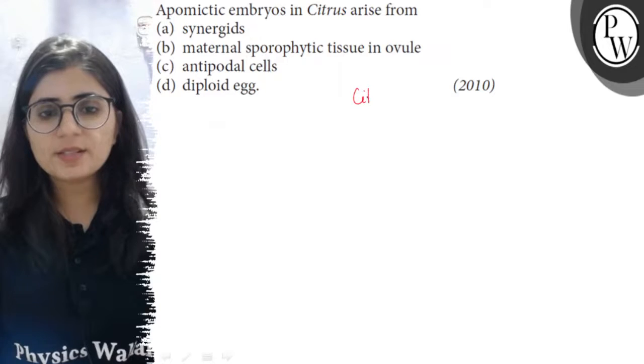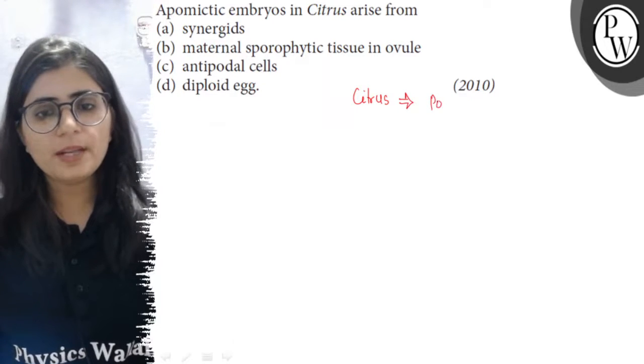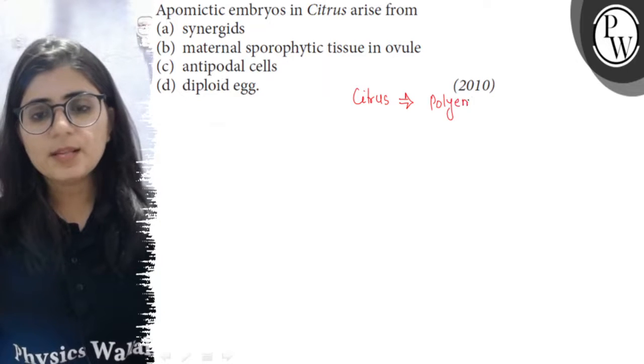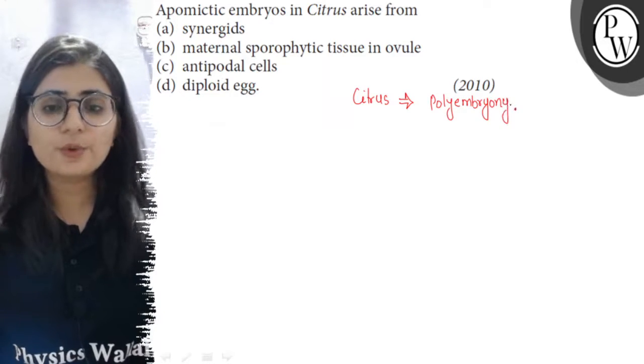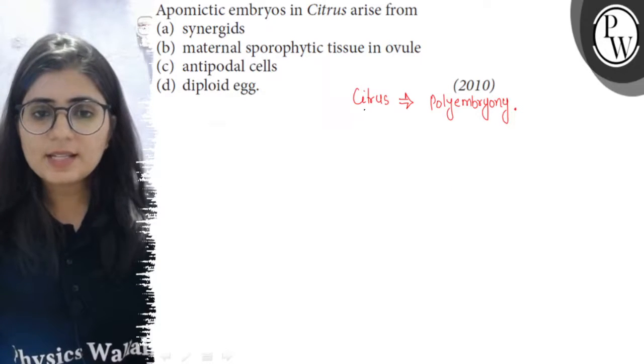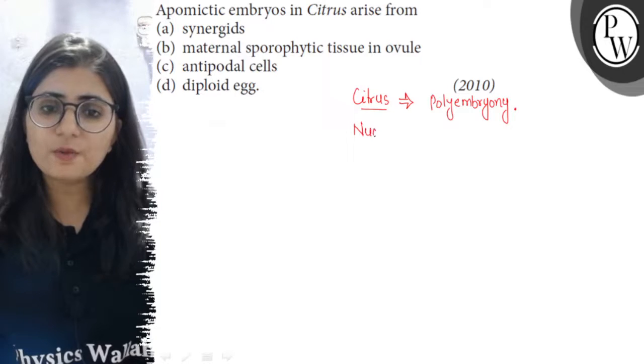In citrus, there is a condition called polyembryony. It means in one seed of citrus, there are more than one embryo. And these additional embryos are derived from the cells of nucellus.